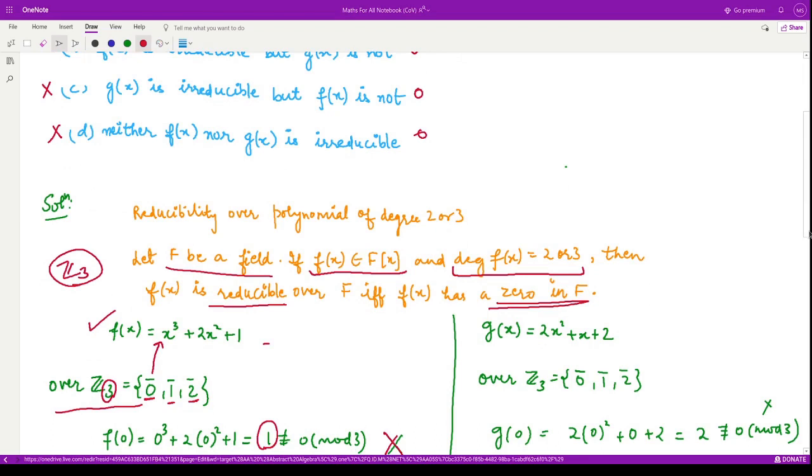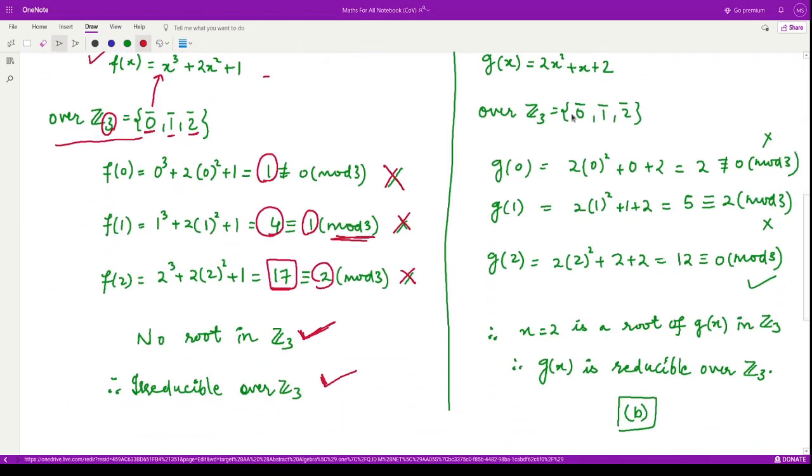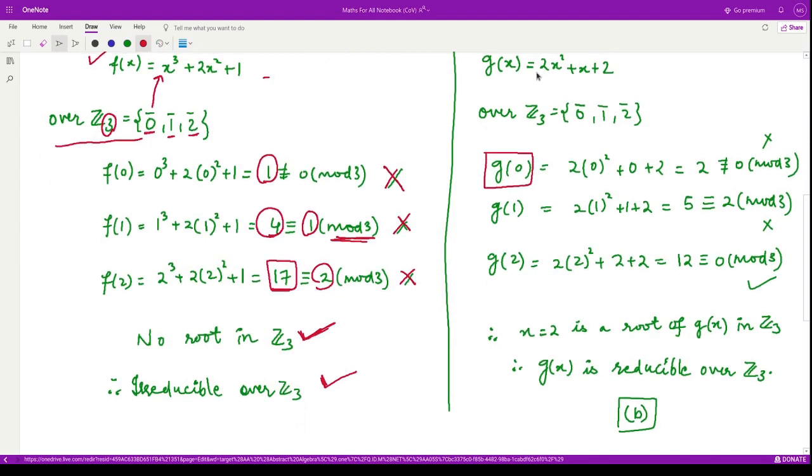So, now let us look at the polynomial g(x). It is given to be 2x² + x + 2. Again, we will look for g(0). You plug 0 into this polynomial, you will get 2 which is not equal to 0 mod 3. Therefore, this is not a root. When you see g(1), it comes out to be 5. When you divide 5 by 3, you will get 2 as remainder. So, it is also not equal to 0 mod 3. So, this is also not a root.